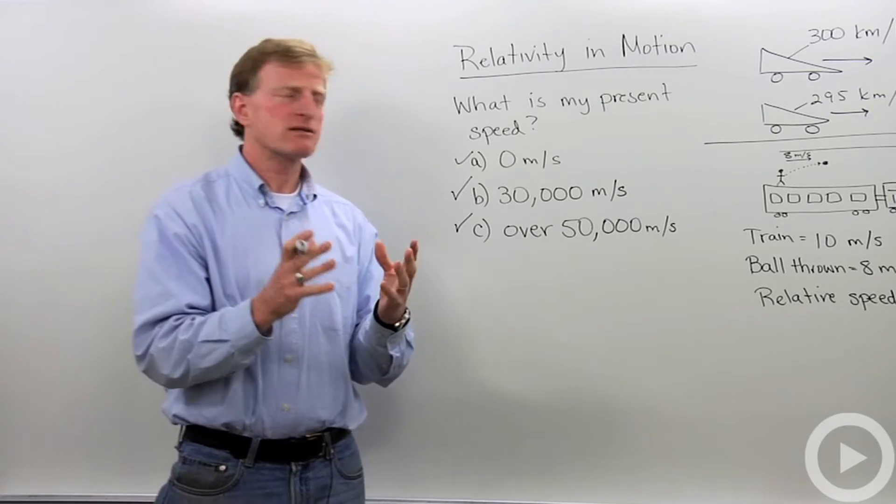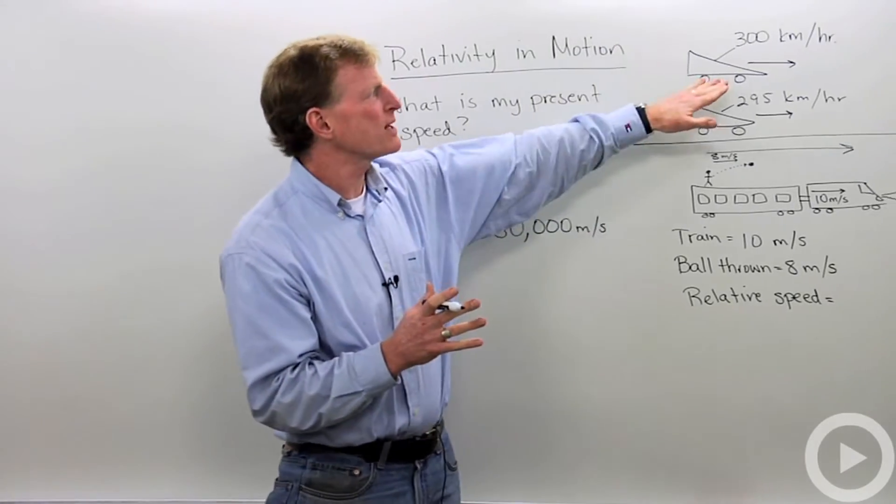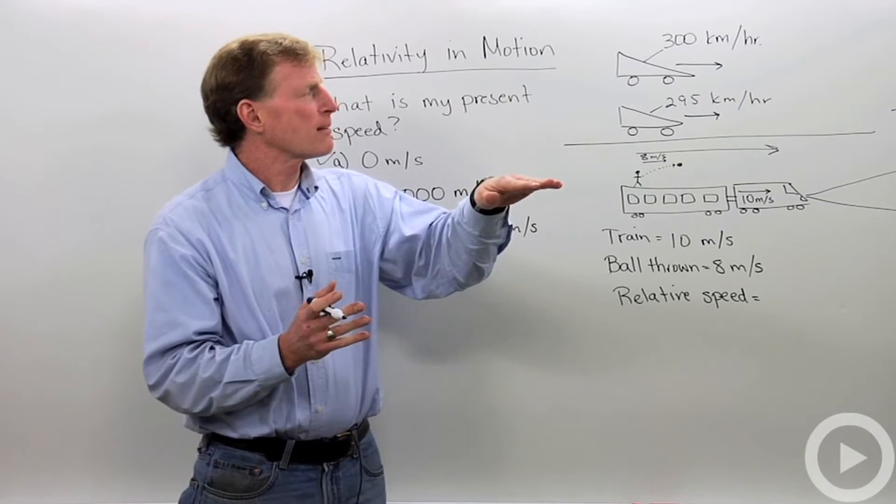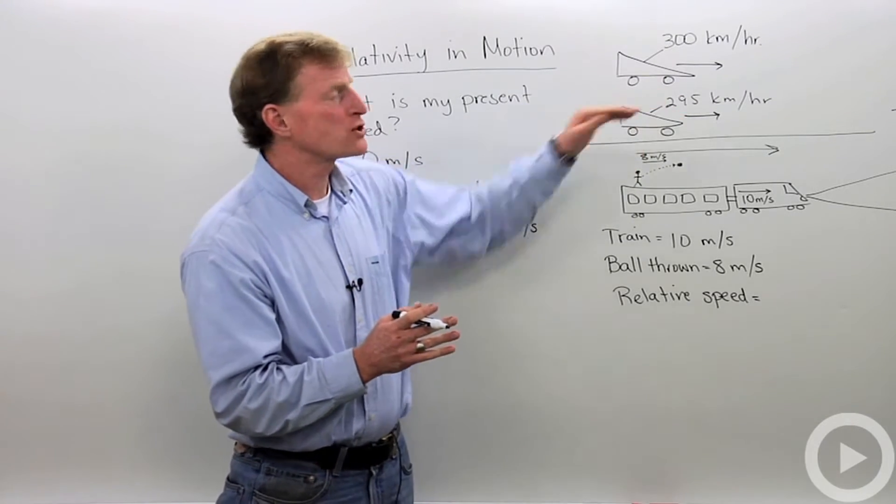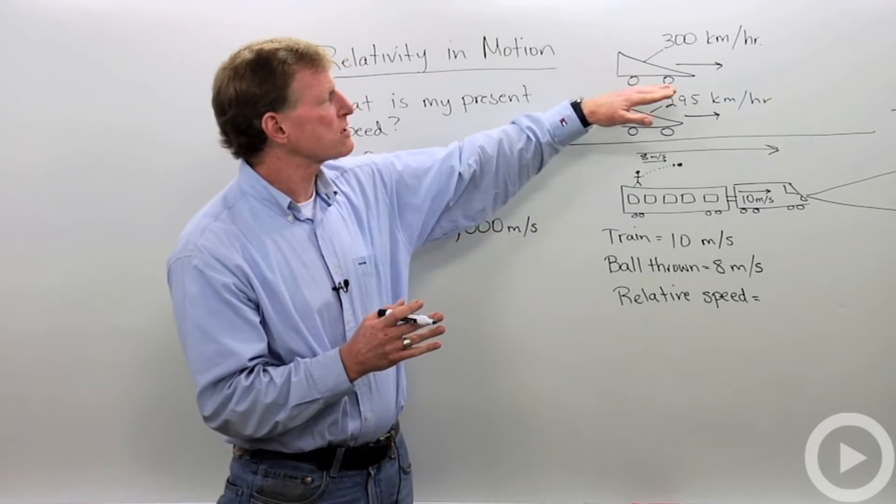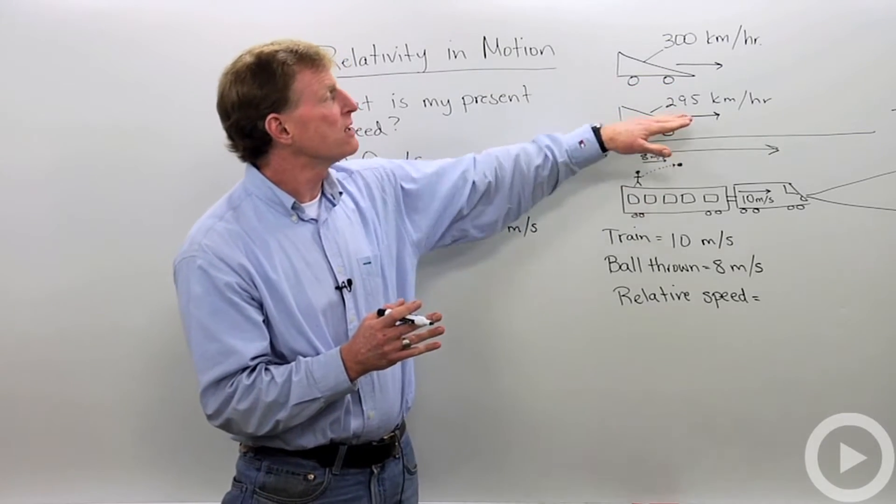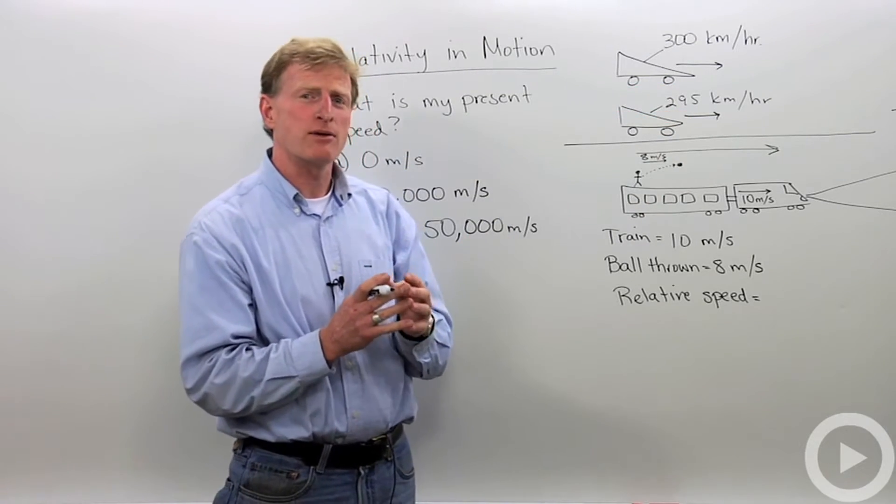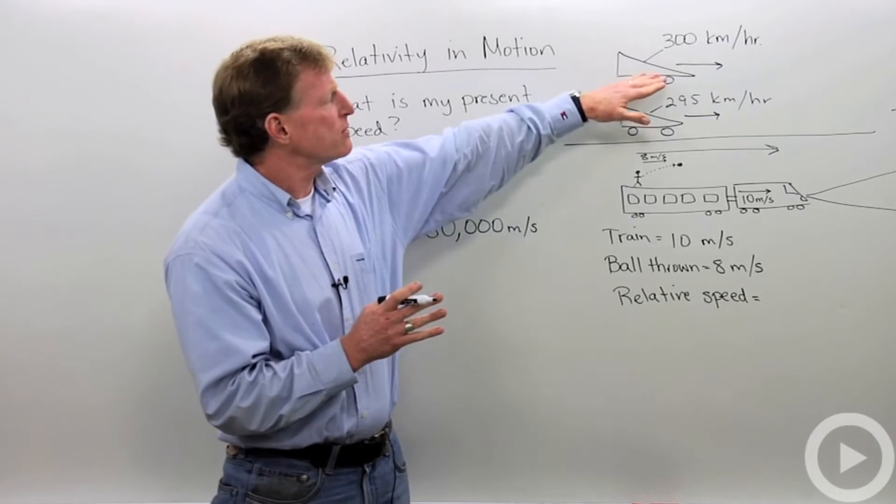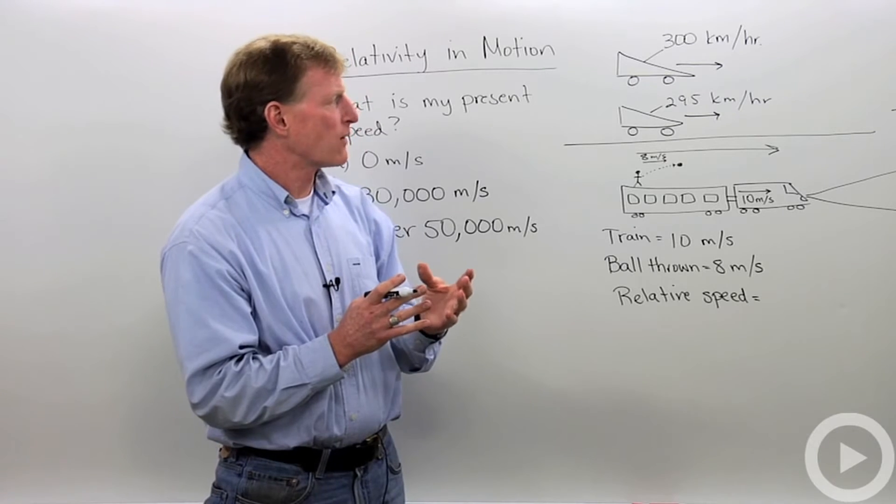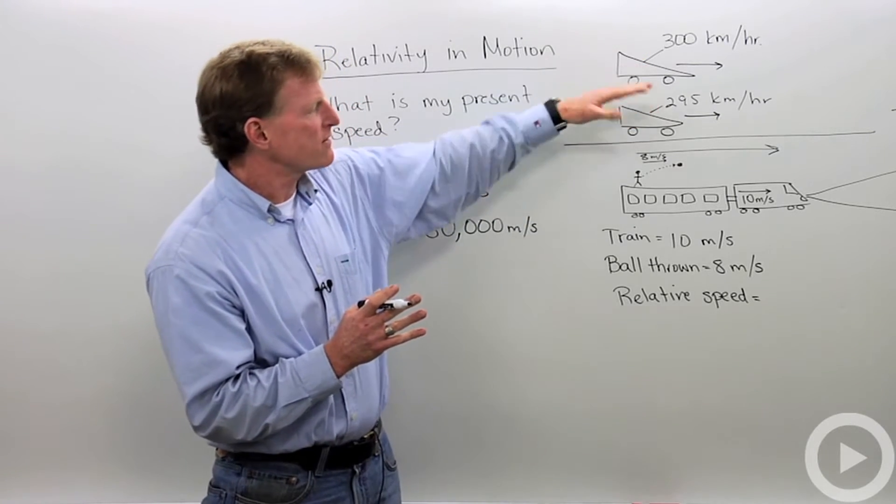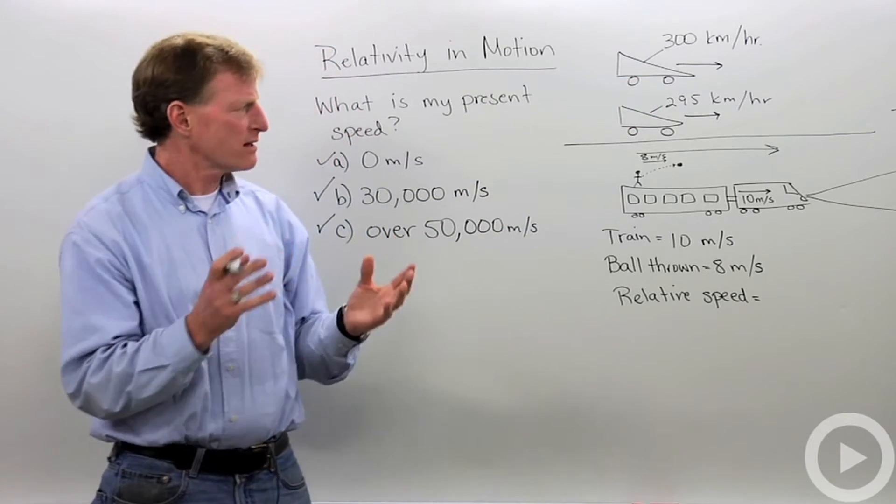Let's look at some examples. I've got a race car. That race car is traveling at 300 kilometers per hour. That speed is relative to the track. If that race car is passing another race car that's going 295 kilometers per hour, the speed relative to the slower race car is 5 kilometers per hour. So again, relativity. Let's look at another example.